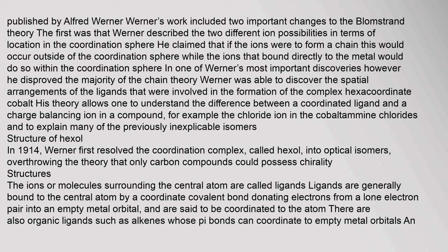Following Blomstrand's theory, Danish scientist Sophus Mads Jørgensen made improvements to it. In his version, Jørgensen claimed that when a molecule dissociates in solution, there were two possible outcomes: the ions would bind via the ammonia chains Blomstrand described, or the ions would bind directly to the metal. It was not until 1893 that the most widely accepted version of the theory was published by Alfred Werner. Werner's work included two important changes to the Blomstrand theory.